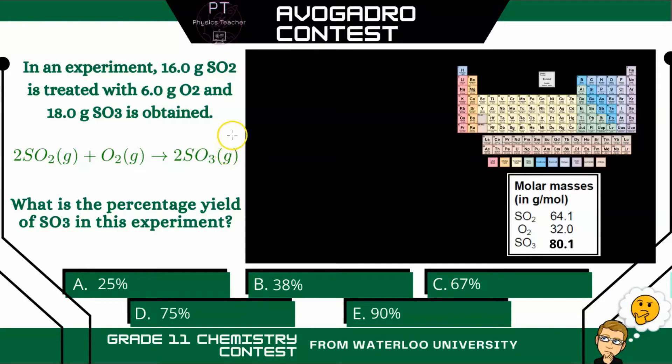So in this question, we have an experiment where 16 grams of SO2 is treated with 6 grams of oxygen, and then we obtain an experimental value of 18 grams of SO3, and we need to determine the percentage yield in this experiment of SO3.